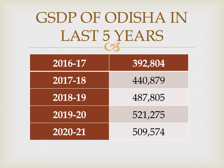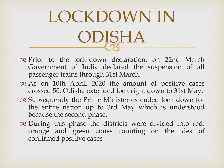Looking at the GSDP of Odisha over the last five years from 2016 to 2020: in 2016 the GSDP was ₹3,92,804 crores, with a steady growth visible each year. From 2016 to 2017 there was approximately ₹48,000 crore growth in GSDP. There was a slight decrease in 2019 due to the economic slowdown at that time. In 2020, the COVID year, there was a huge decrease — from approximately ₹5,21,000 crores down to ₹5,09,574 crores — a significant drop due to the pandemic.